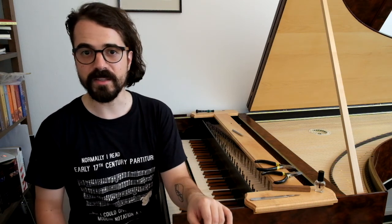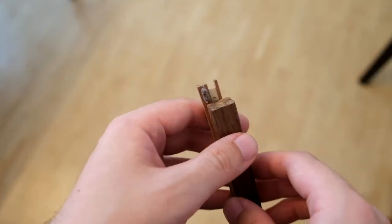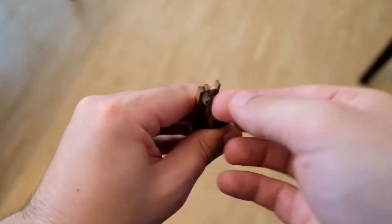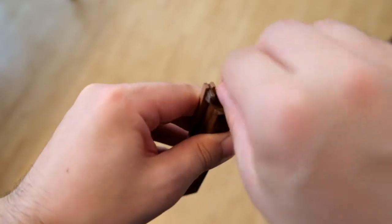Applying oil to a fresh plectrum will delay or even prevent this issue, whilst oiling a plectrum after it has developed this defect will fix the issue. Alternatively, if you're in a pinch, you can either polish the top of the plectrum with the back of your fingernail or apply grease from your forehead.